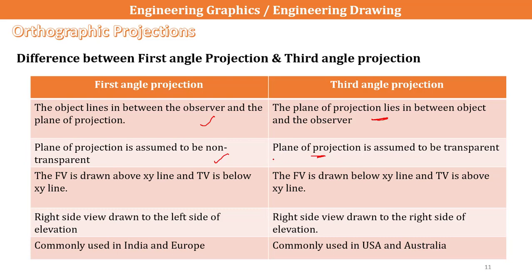In first angle projection, the plane of projection is non-transparent, whereas in third angle projection the plane is transparent so the object can be seen clearly. Regarding view placement: in first angle projection, the front view is drawn above the XY line and the top view is drawn below the XY line. In third angle projection, the front view is drawn below the XY line and the top view is drawn above the XY line.